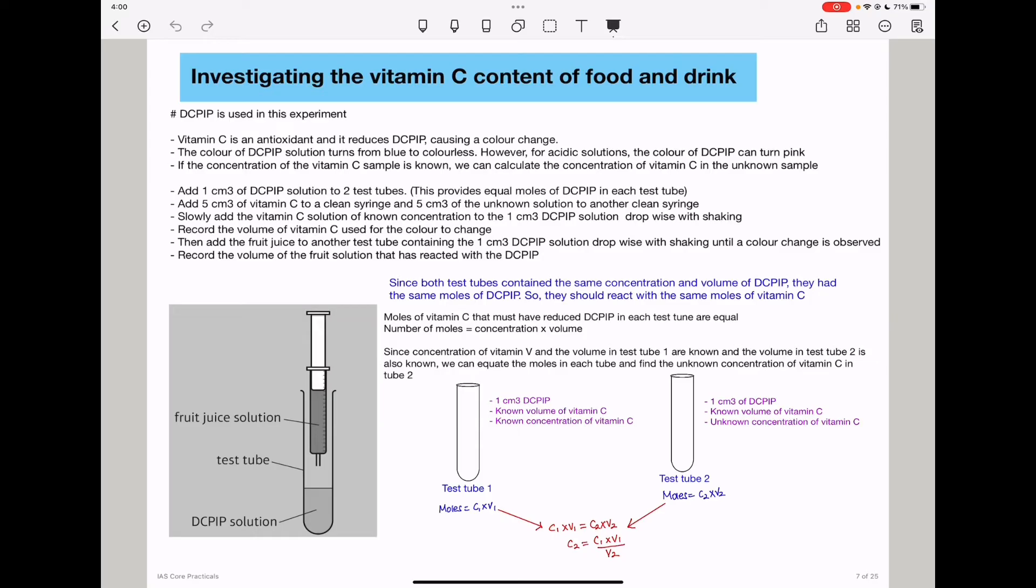So you'll do the same thing for the other experiment. And again, to another test tube with 1 cm³ of DCPIP, use a syringe containing 5 cm³, and add the unknown vitamin C sample drop-by-drop as you shake until the sample is decolorized or until it turns pink if it's acidic. And also record the volume of the unknown sample that has been used from the syringe. And then carry out a calculation as below.